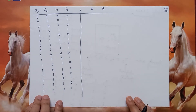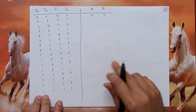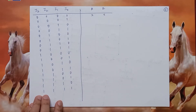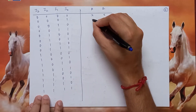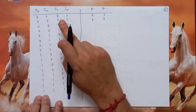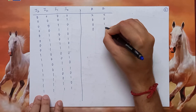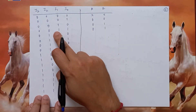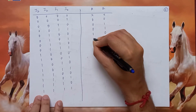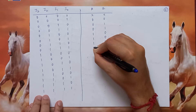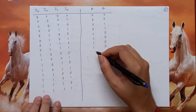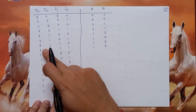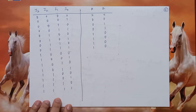When all inputs are 0, A and B are both don't cares. As per the priority order, when I0 becomes 1 and the rest are 0, A and B are both 0 and 0. When I3 and I2 are both 0 and I1 becomes 1, AB will be 0,1 irrespective of what I0 is. When I2 becomes 1 and I3 is 0, for all four cases the values of I1 and I0 do not matter; A and B will be 1,0. When I3 becomes 1, it does not matter what I2, I1, and I0 are; AB will be 1,1.